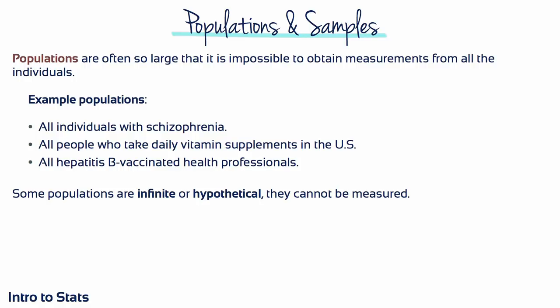Populations don't even need to consist of people. It could be a population of rats, businesses, components manufactured in a factory — really anything an investigator wants to study.